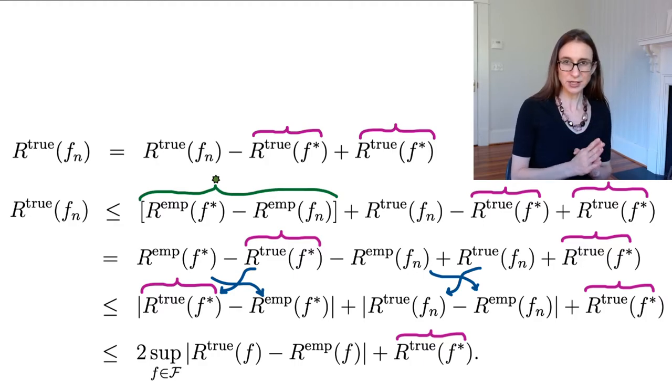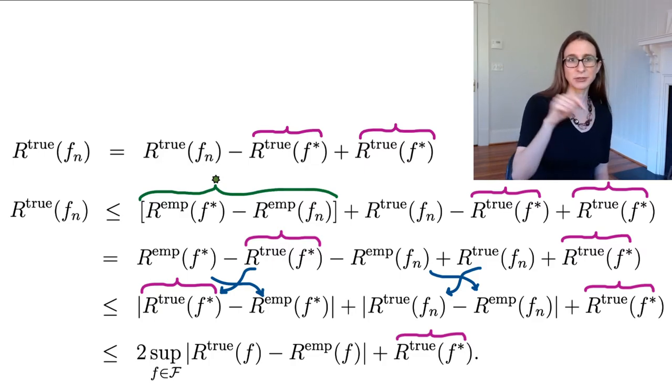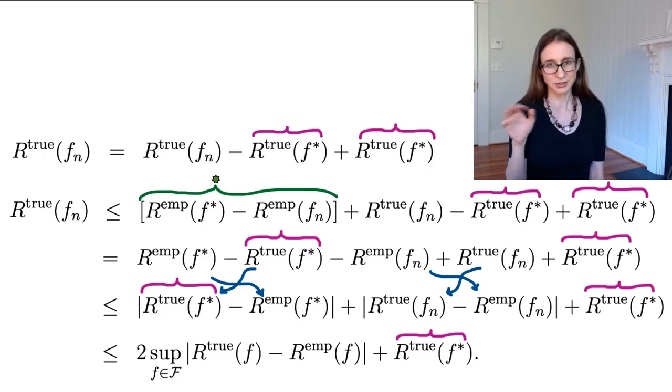Okay, so I'm using the Occam's razor bound essentially twice here, so two times, and then it's going to be the Occam's razor bound result which is the stuff. So it's the square root of log M plus log one over delta over 2n and that thing.